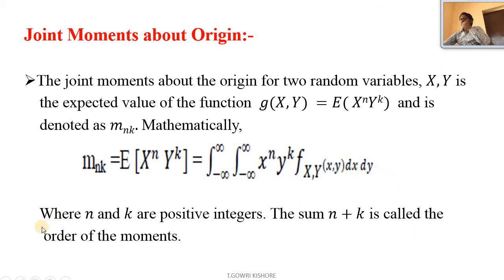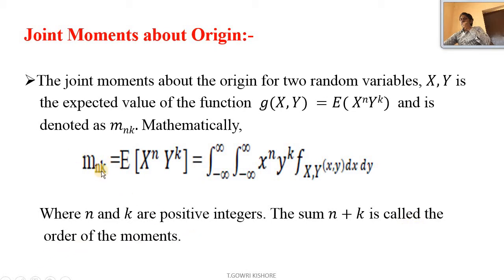Here n and k are positive integers. The sum of n plus k is called the order of the moment.